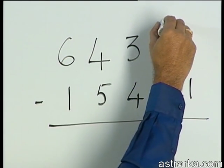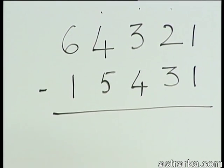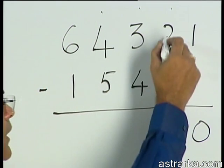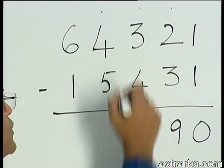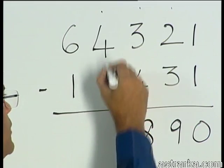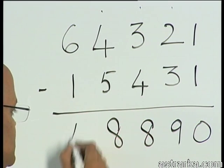The pattern commences here. 1 minus 1 is 0. The difference is 1, therefore this is 9. The difference is 1, therefore it is 8. The difference is 1, it is 8. 6 minus 1 is 5, minus 1 is 4.